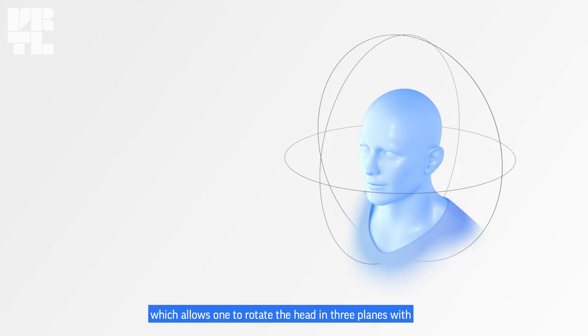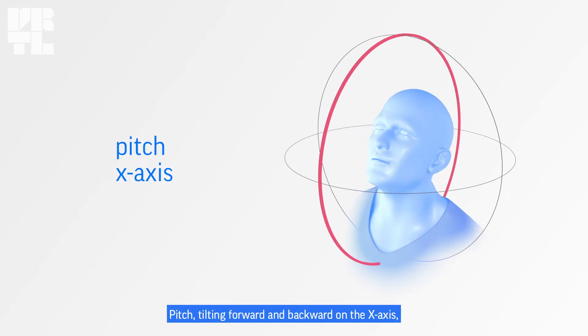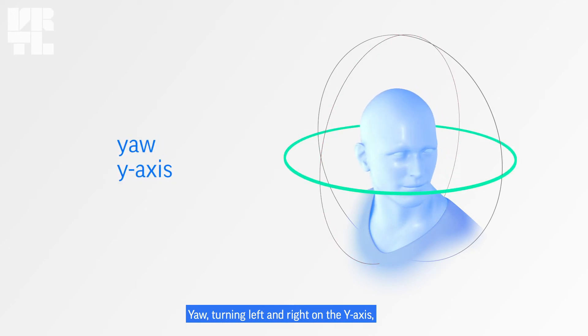With pitch, tilting forward and backward on the x-axis, yaw turning left and right on the y-axis, and roll tilting side to side on the z-axis.